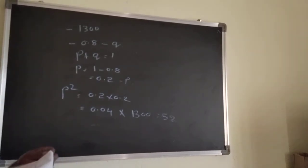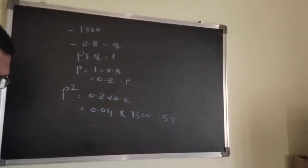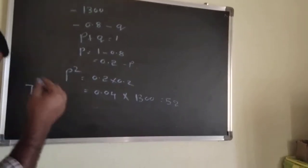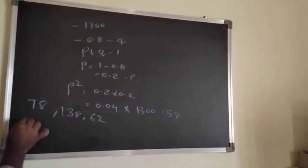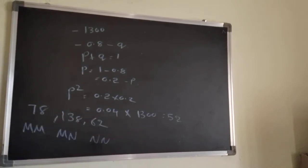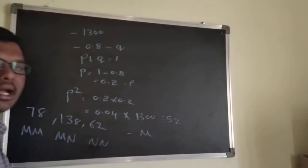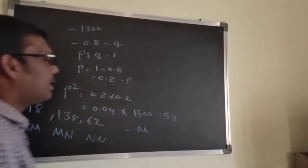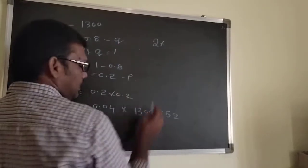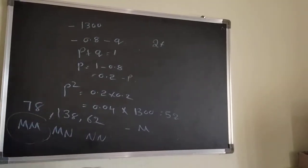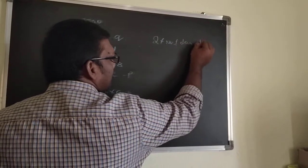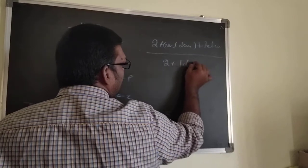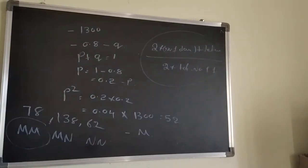The fourth question: in a population of 278, the observed numbers of MM, MN, and NN blood groups are 78, 138, and 62. They ask for the frequency of M. There is a formula: frequency of M = (2 × number of MM individuals + number of MN individuals) divided by (2 × total number of individuals). You can calculate to get the answer.